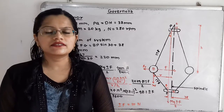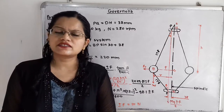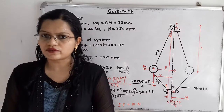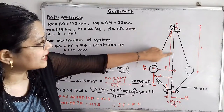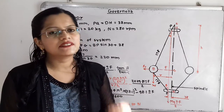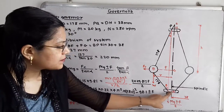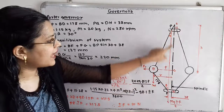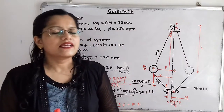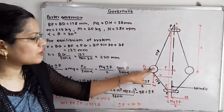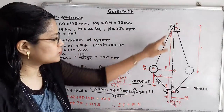Let us first understand how to draw the diagram as per the given data. The arms are hinged at a distance of 38 mm from the axis of rotation. This axis of rotation is the spindle axis, shown as a dash-dot line. We show the 38 mm horizontal distance from the spindle axis, marking the end points of the arms as point P and point D. The arms are of equal length — from the center of the fly ball, these end points are 178 mm away.